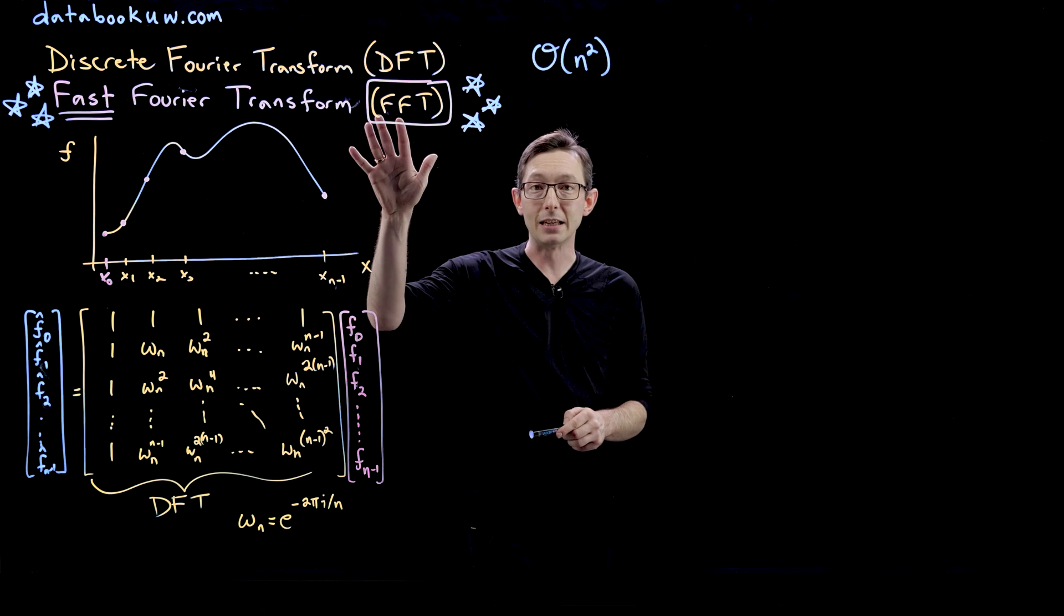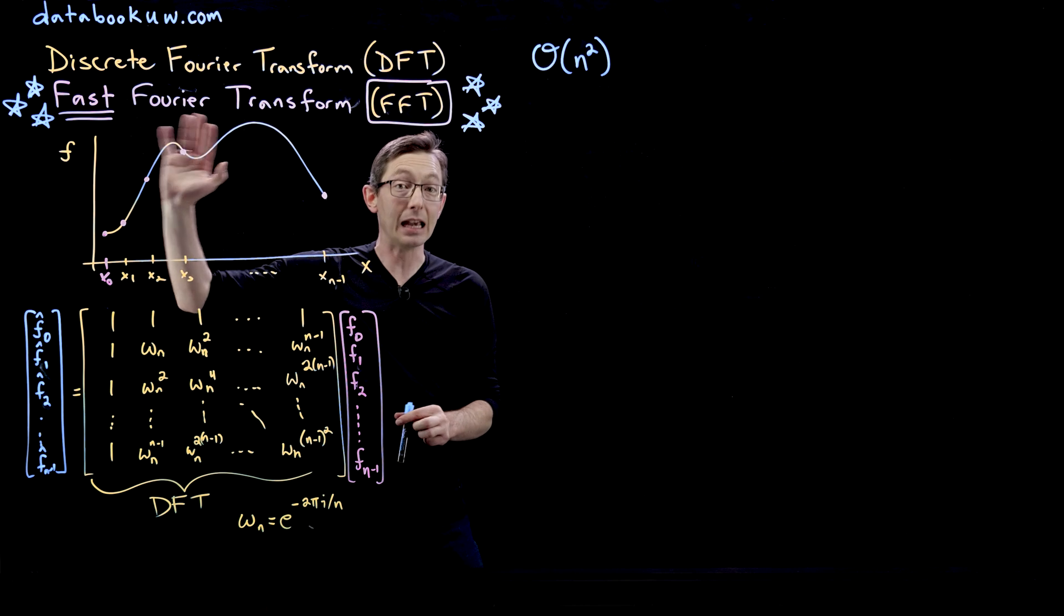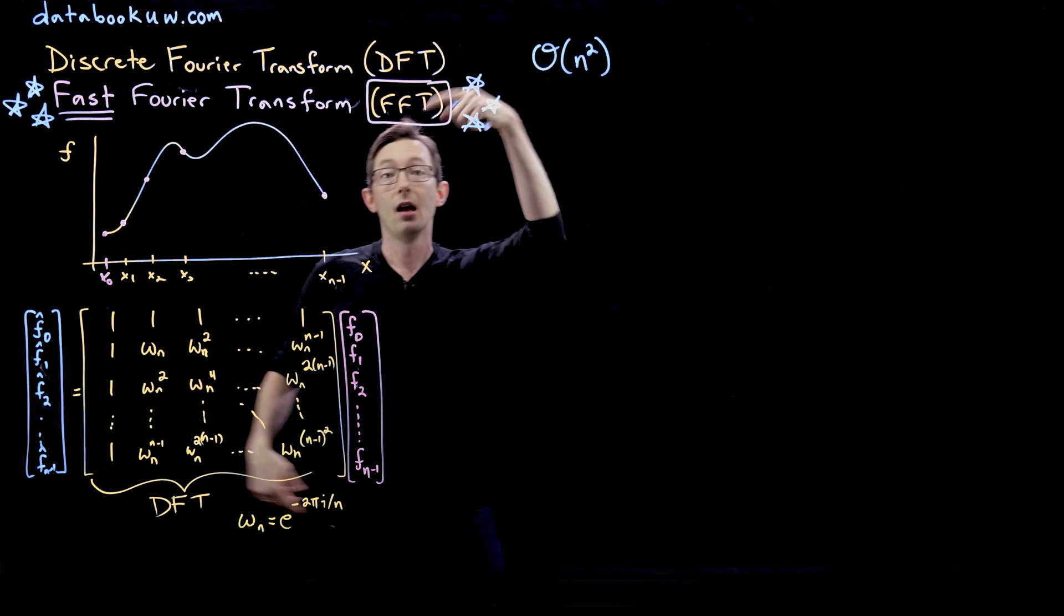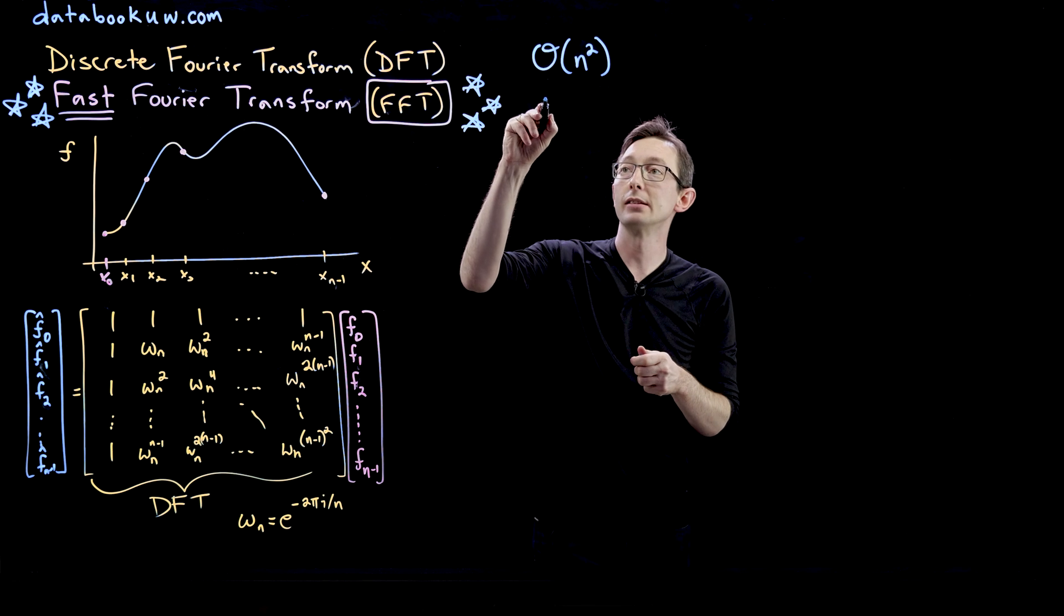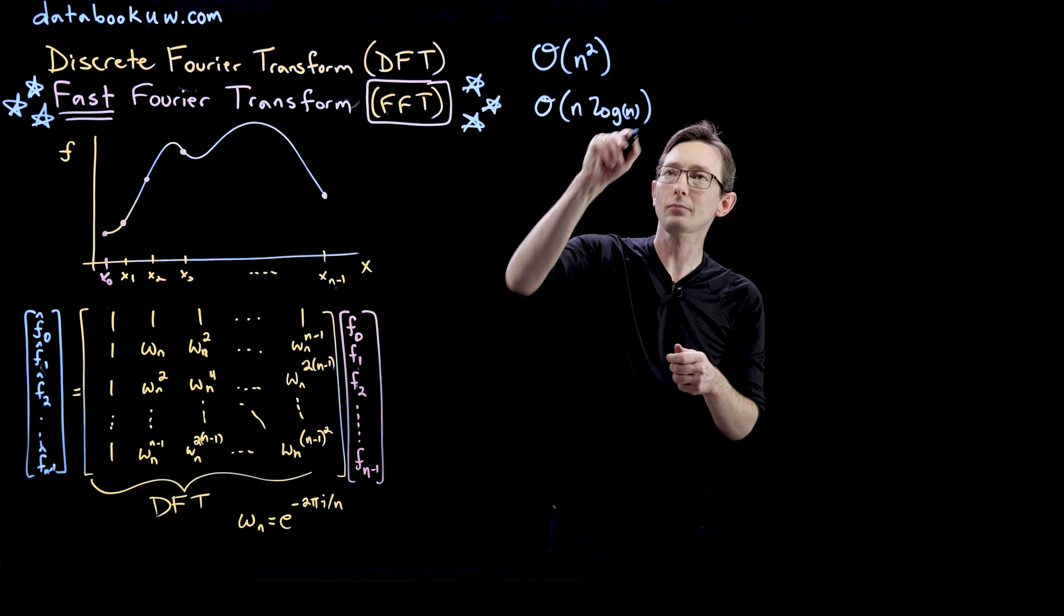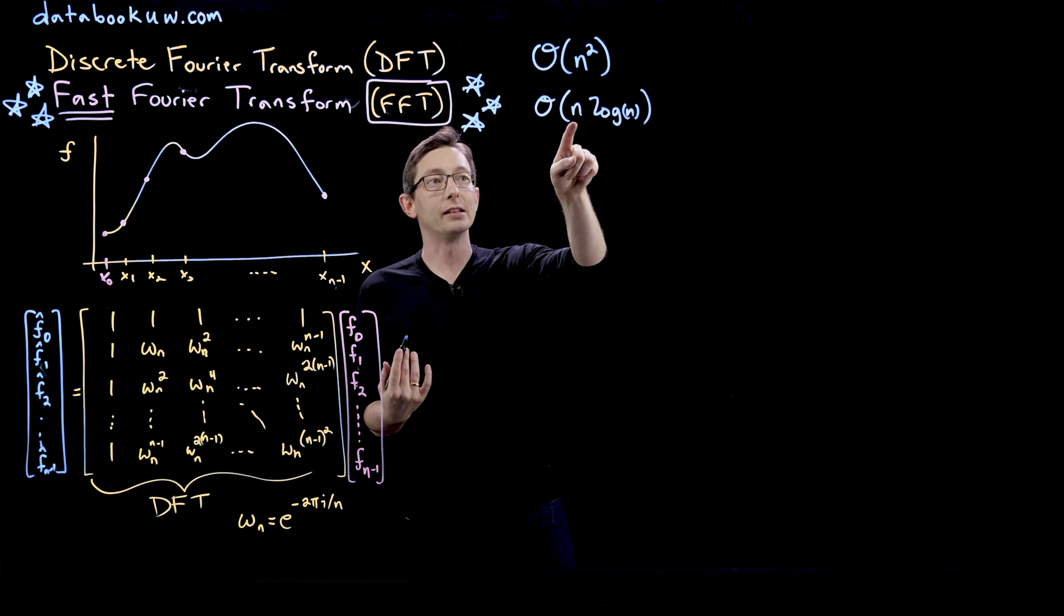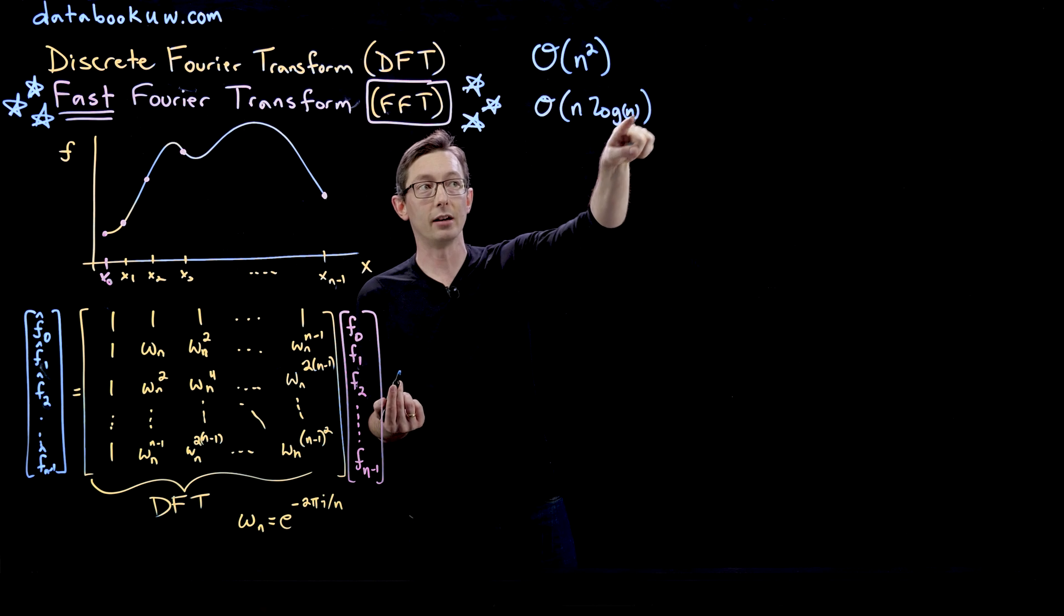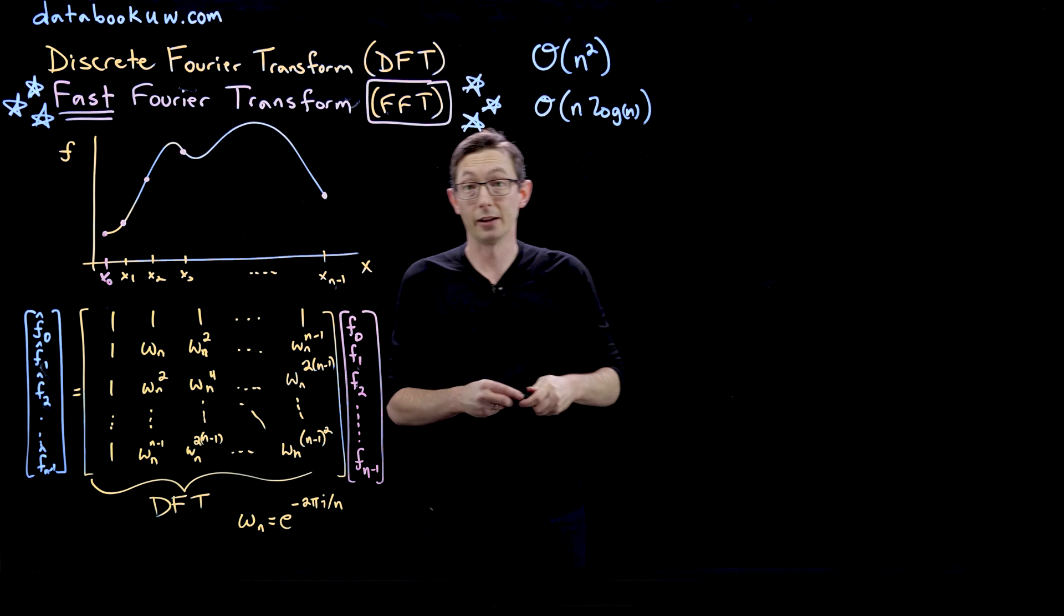Whereas the FFT achieves the exact same Fourier transform. These give exactly the same output, but the fast Fourier transform is order n log n. And this is a so-called fast scaling. It's almost linear in n. There's just this small correction of log n in the scaling.